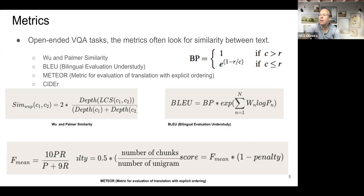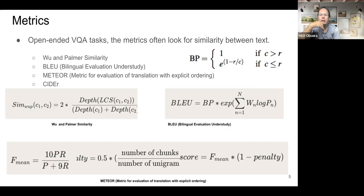We also have BLEU — Bilingual Evaluation Understudy — which counts matching n-grams between the candidate translation and reference text. This metric originally came from text translation and has a brevity penalty so you can't just output a cloud of words. However, its limitation is that it's based on simplistic text string matches and doesn't take into account word ordering, which is important in text.